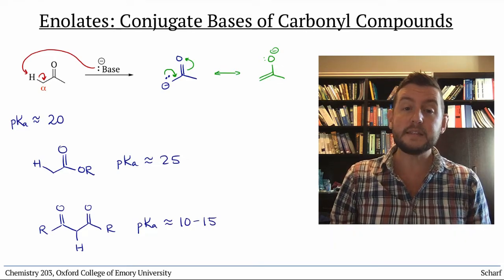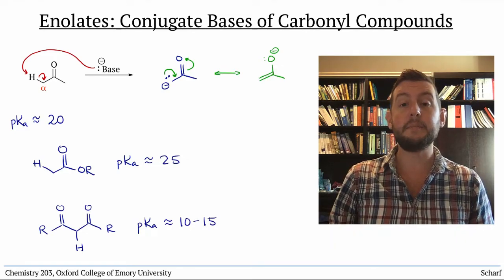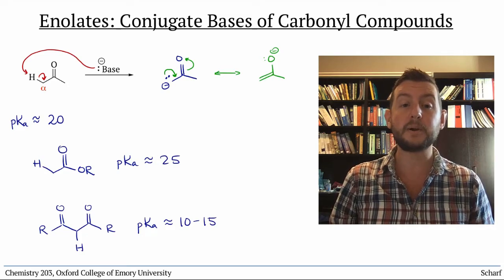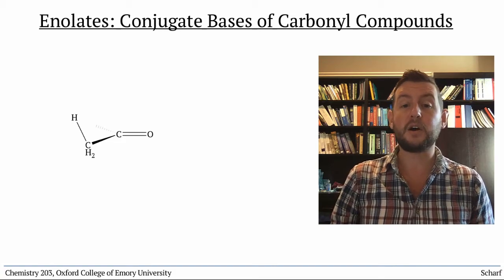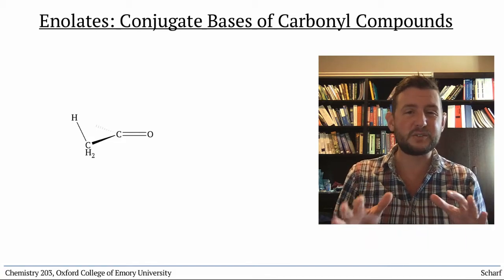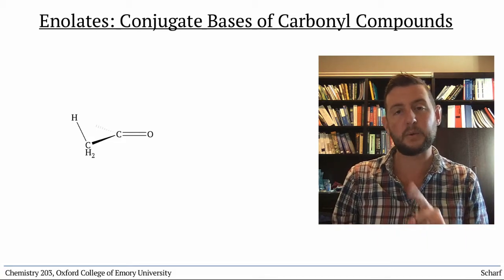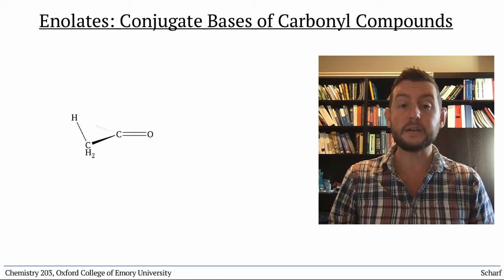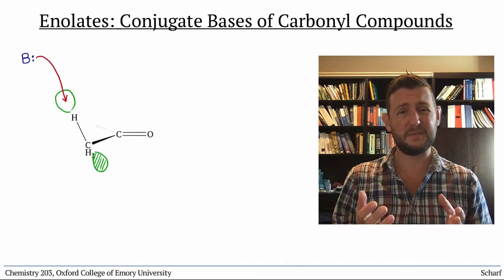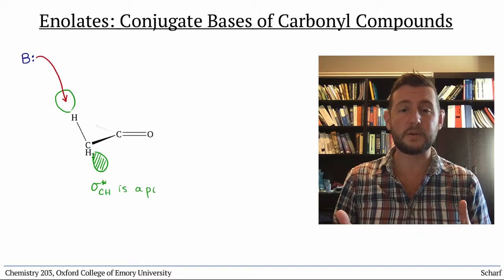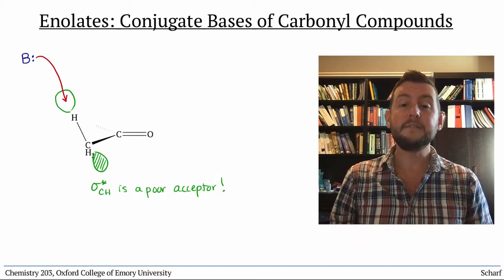We can explain this difference in pKa by examining the molecular orbitals that participate in this reaction. To do this, I'm going to draw a carbonyl compound in a bit of a strange orientation, but bear with me. It appears that the base donates electrons into sigma star CH, but we know that's not a very good acceptor orbital on its own.